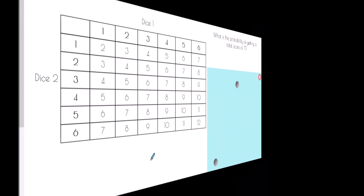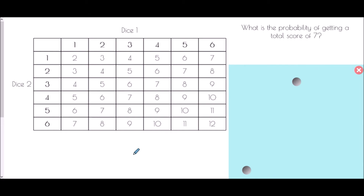Drawing the table is the first stage of all of these questions, but generally they then relate to probability as well. The whole idea is we want to know how many different outcomes are possible so that we can work out some probabilities about the situation. So we're going to go back to the first example of the two dice and their scores being added.